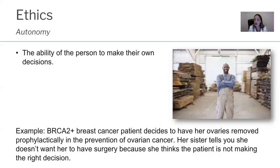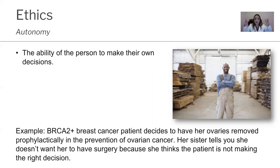How about autonomy? Autonomy is the ability of the person to make their own decisions — from 'auto,' meaning self. An example: a BRCA2-positive patient decides to have her ovaries removed prophylactically to prevent ovarian cancer. Her sister tells you she doesn't want the patient to have surgery because she thinks the patient is not making the right decision. Who cares what the sister wants? This is the patient's decision — autonomy, the ability of the person to make her own decisions.